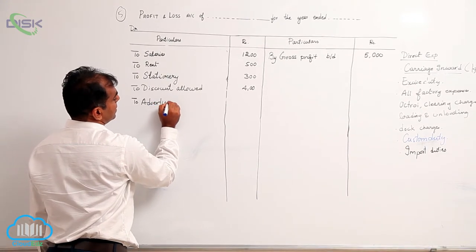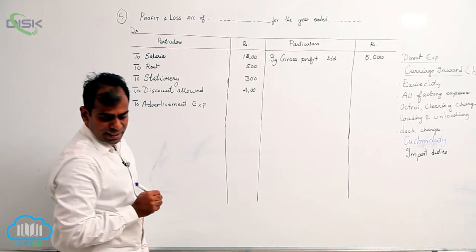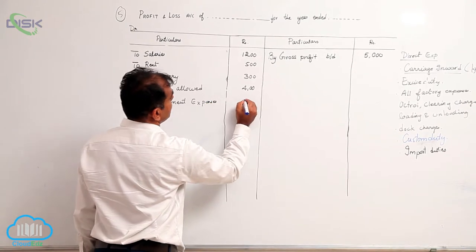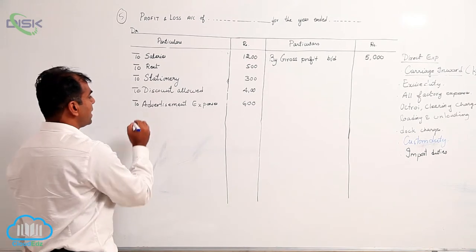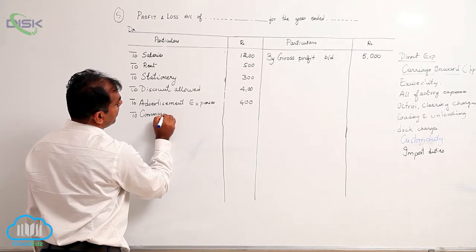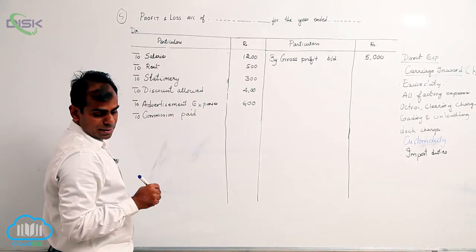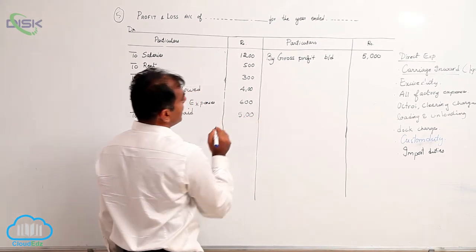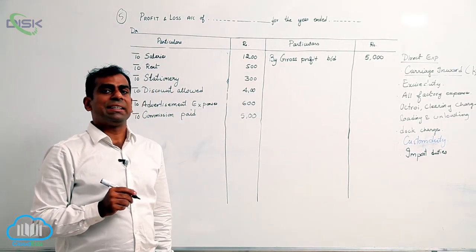Advertisement expenses is again an expense, so on the debit side, the amount being rupees six hundred. The next item is commission paid — again it is an expense because you paid it — so commission paid goes on the debit side, amount being five hundred.